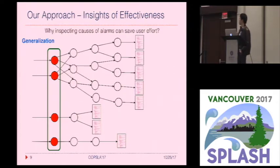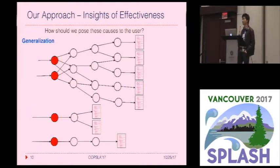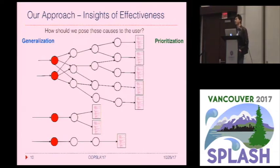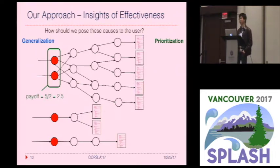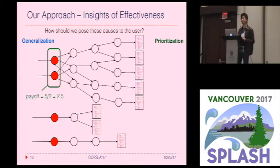The next question is how should we pose these root causes as questions to the user? This leads to our second observation, which is called prioritization. The idea is that a different set of questions can resolve a different number of alarms, so they come with different payoffs. Ideally, we want to first ask users about the questions with higher payoffs in an iterative way. By prioritizing higher-payoff questions, the user gets the most benefit early and can stop when the benefit diminishes. Also, by asking iteratively, we can take into account user responses on the fly and make finding questions smarter.